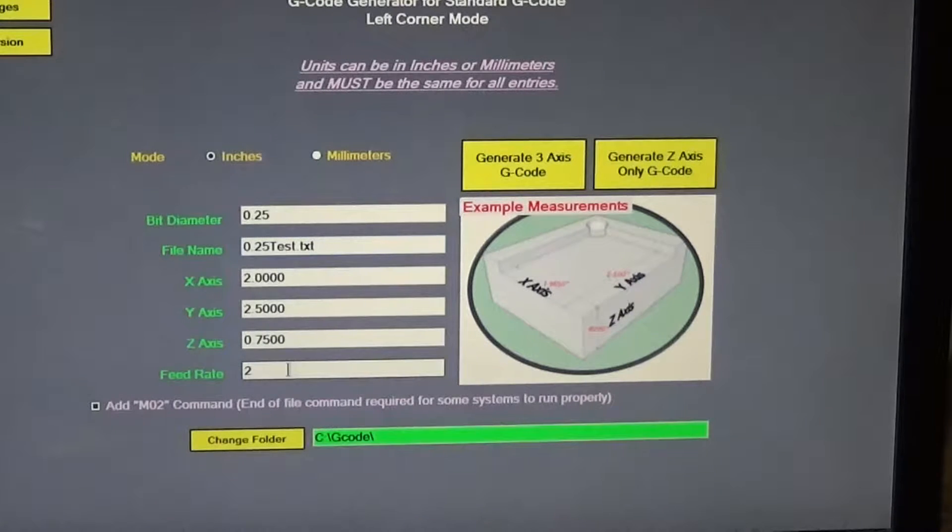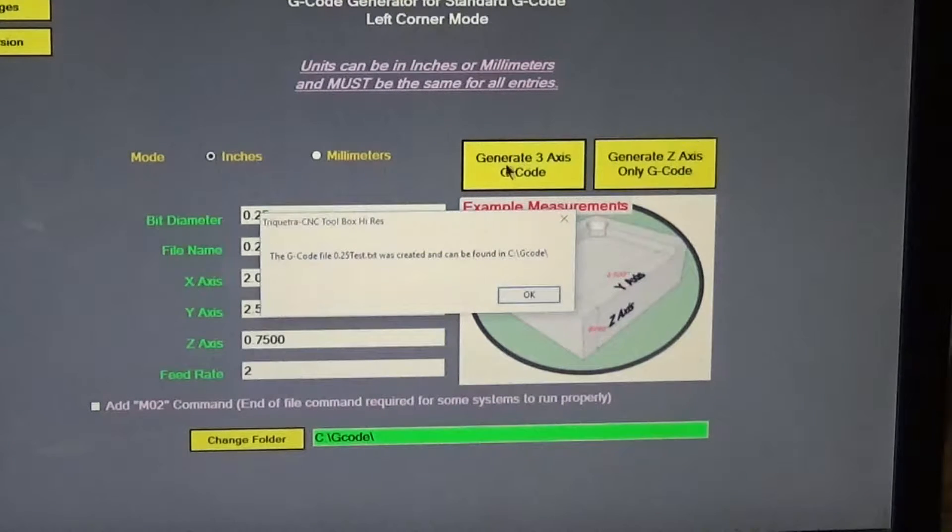There's our measurements again that we used a while ago. Here's an add m02 command - some computers need this, some of them don't. Mine does not. If you have the new X controller you very well may, especially if you're using universal g-code sender. I like the folder save location, so I'm going to generate a three axis code up here. So I'm just going to click that, and I got a message that the g-code file 0.25 test text was created and can be found in the CG code folder. Say okay.